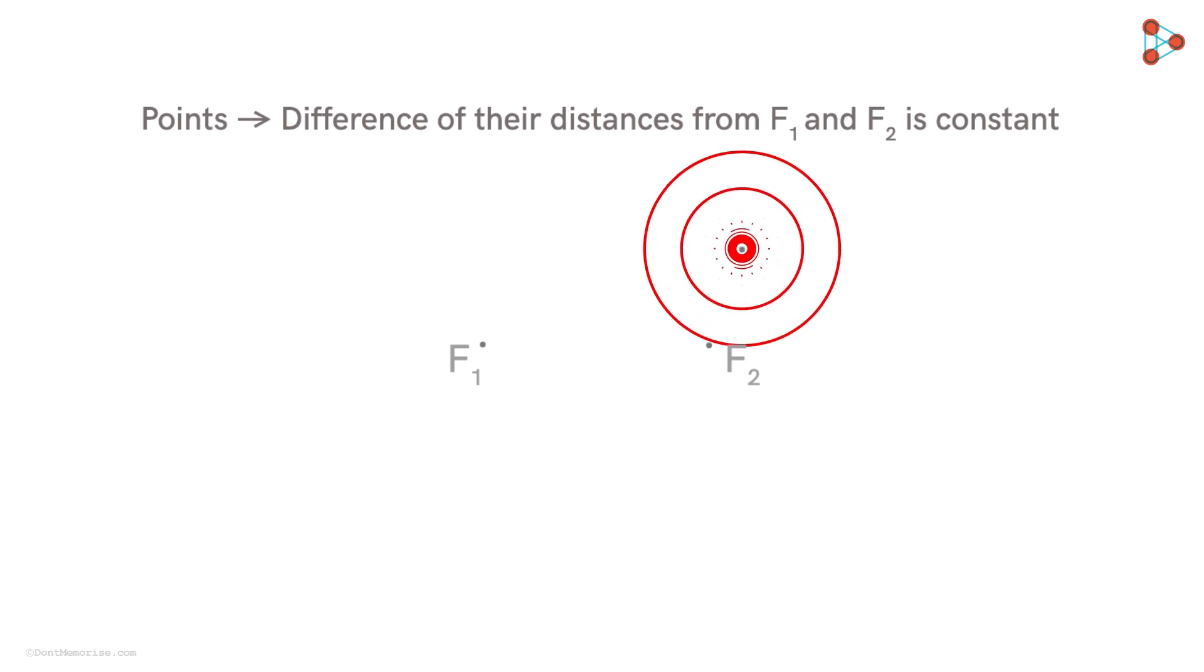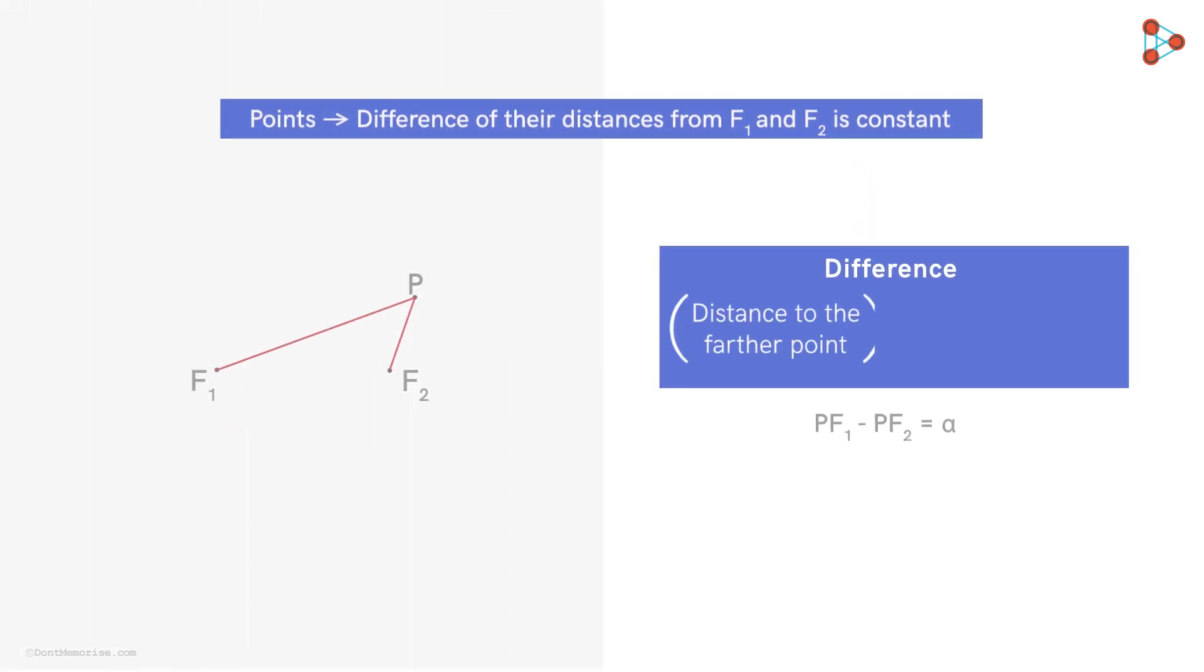Consider this point P. Let's say the difference of its distance from these two points is alpha. That is, PF1 minus PF2 is equal to alpha. One thing to note here is that by difference, we mean the absolute value of the difference. That is, distance to the farther point minus the distance to the closer point. That's why for point P, we subtract its distance to the closer point F2 from its distance to the farther point F1.